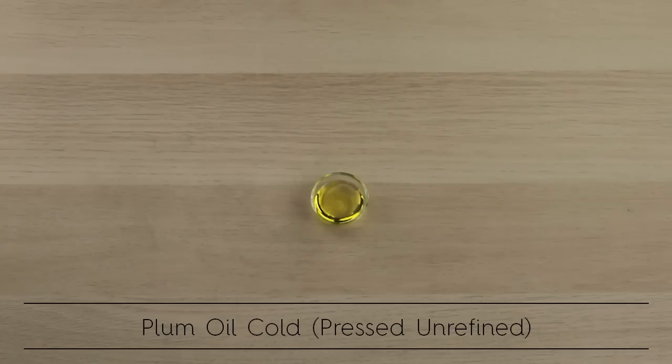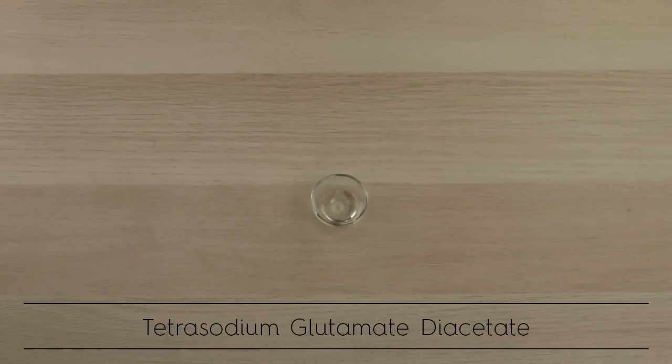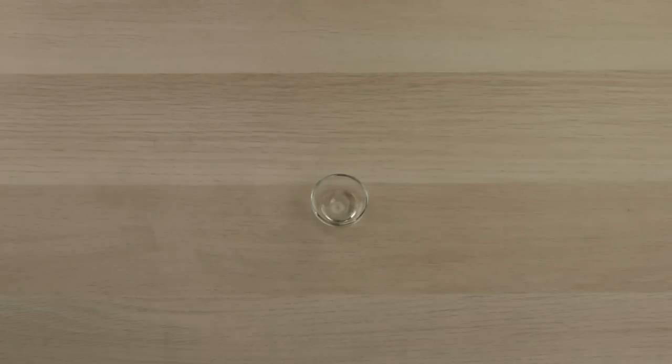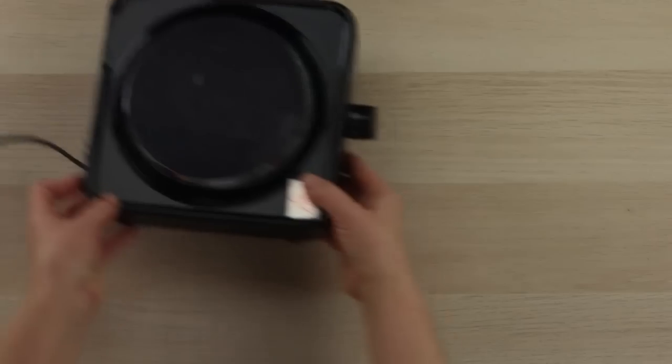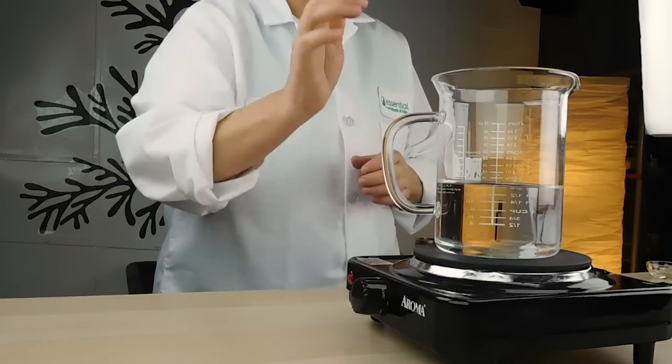You'll need plum oil, phenoxyethanol for preservation, and tetrasodium glutamate diacetate as your chelator. You'll also need a hot plate or a stovetop and a container that's safe for a stovetop.